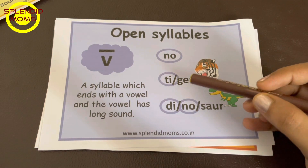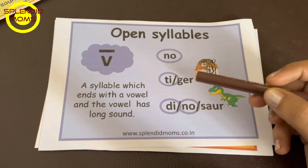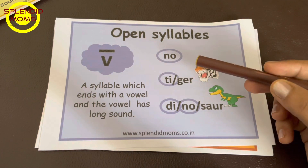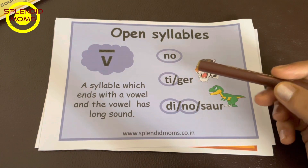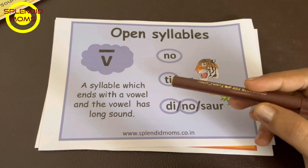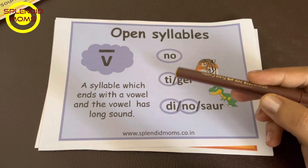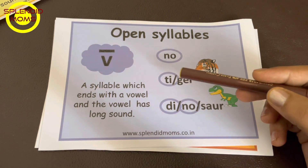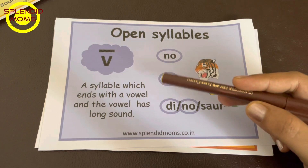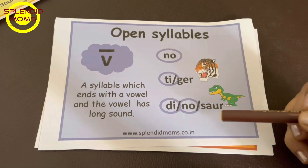Tiger. Tiger is a word which has two syllables — two small sound units. Tiger. If you see the syllable 'tie,' it ends with I, the long sound of the vowel I. Tie. Tie is an open syllable here.